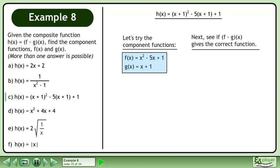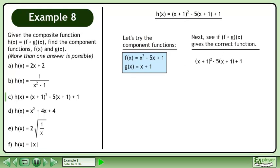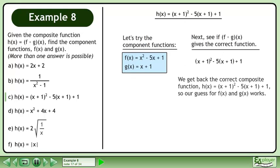Next, see if f gives the correct function. Plug g into f. We get back the correct composite function h equals x plus 1 squared minus 5 times x plus 1 plus 1, so our guess for f and g works.